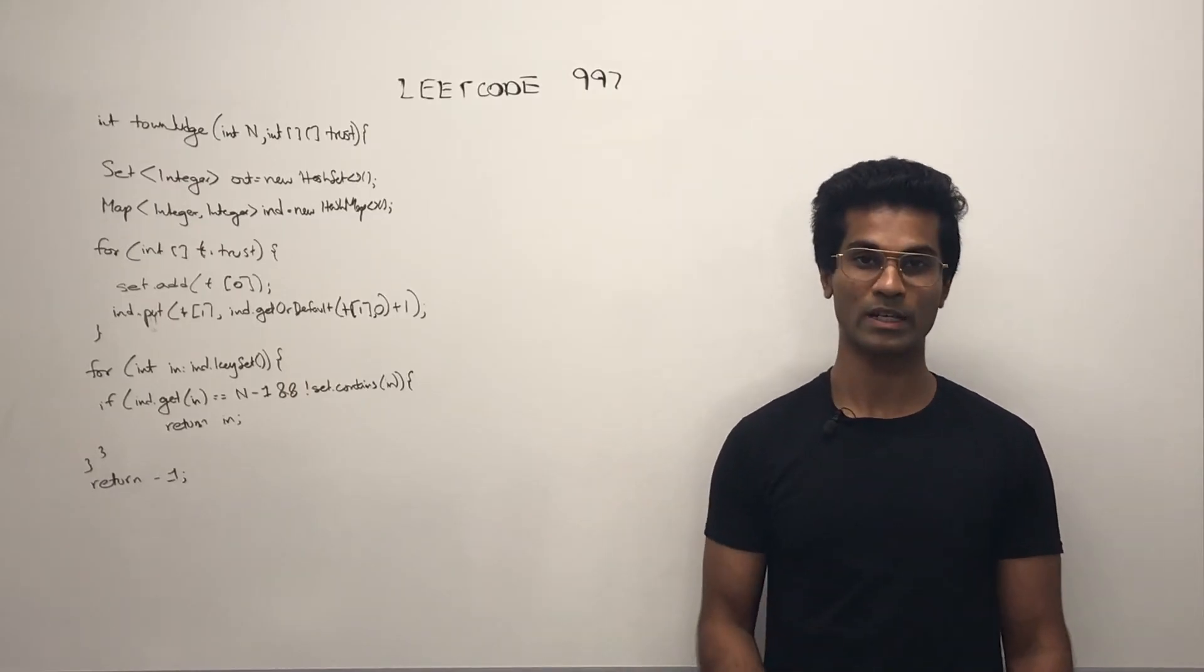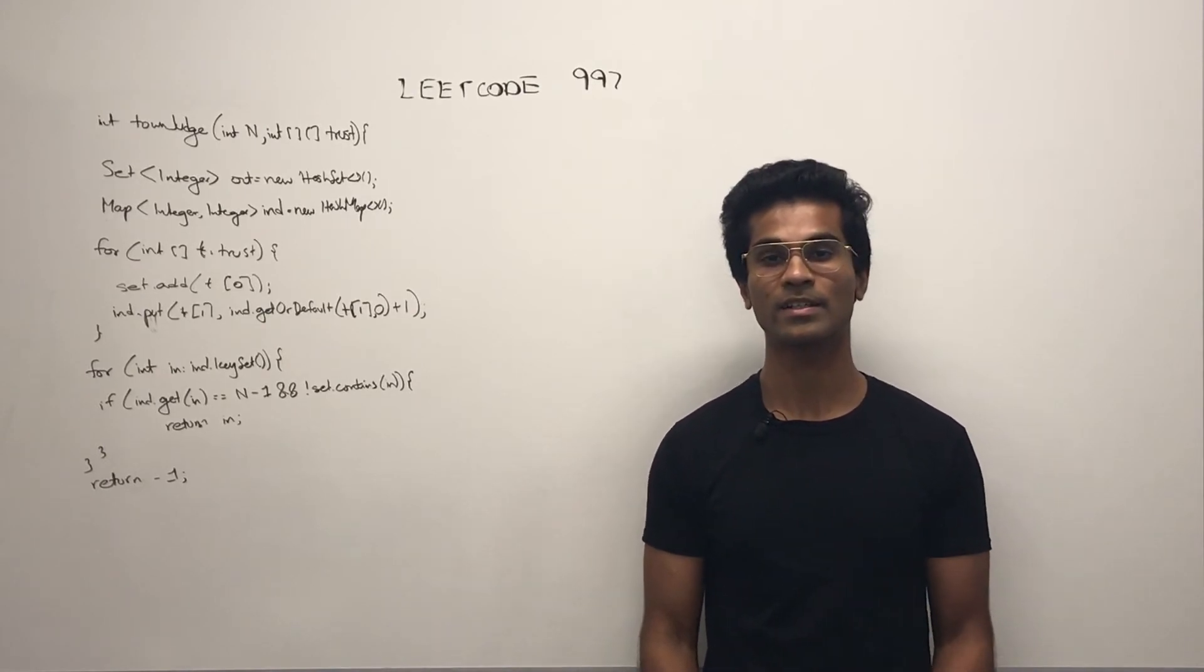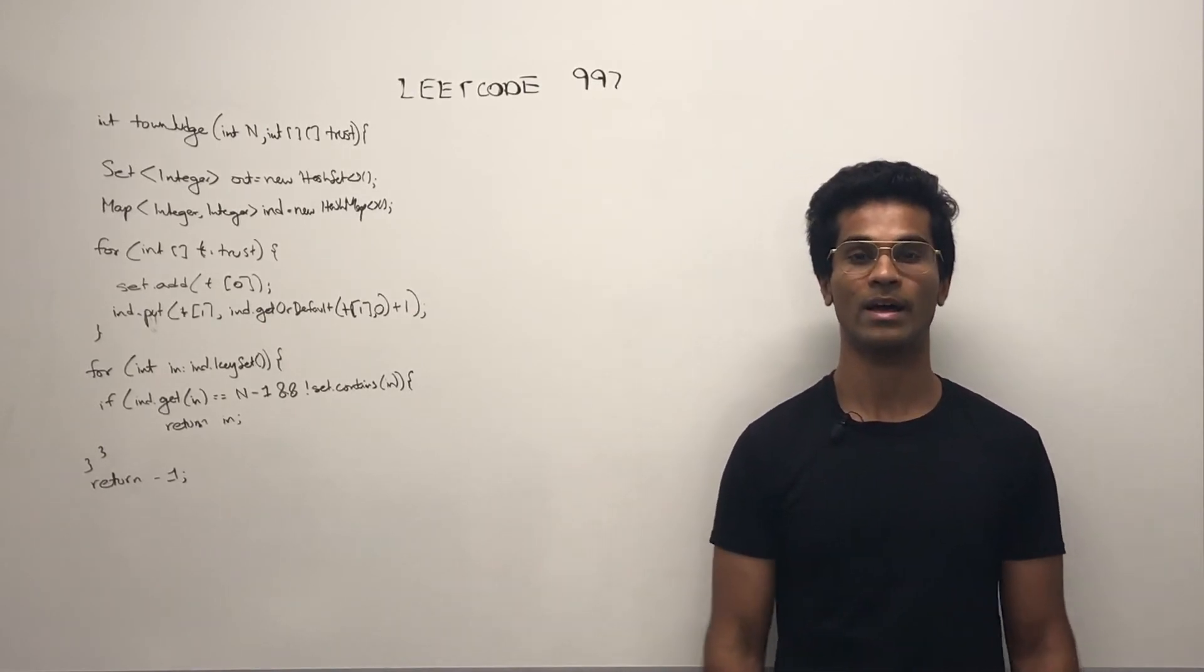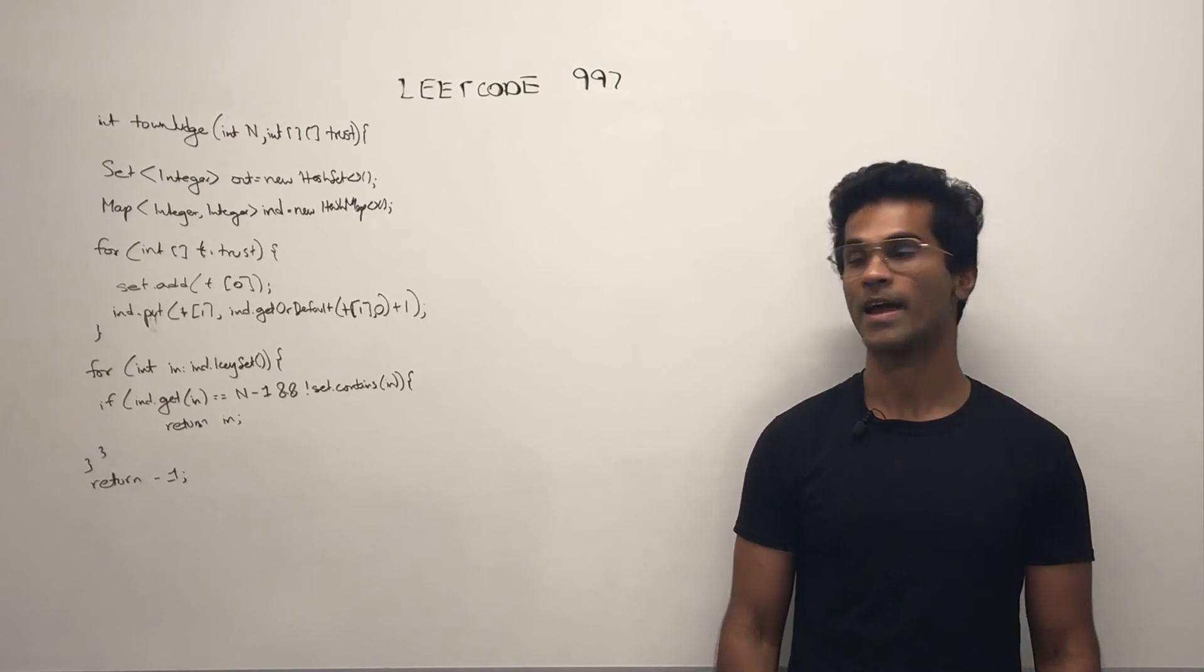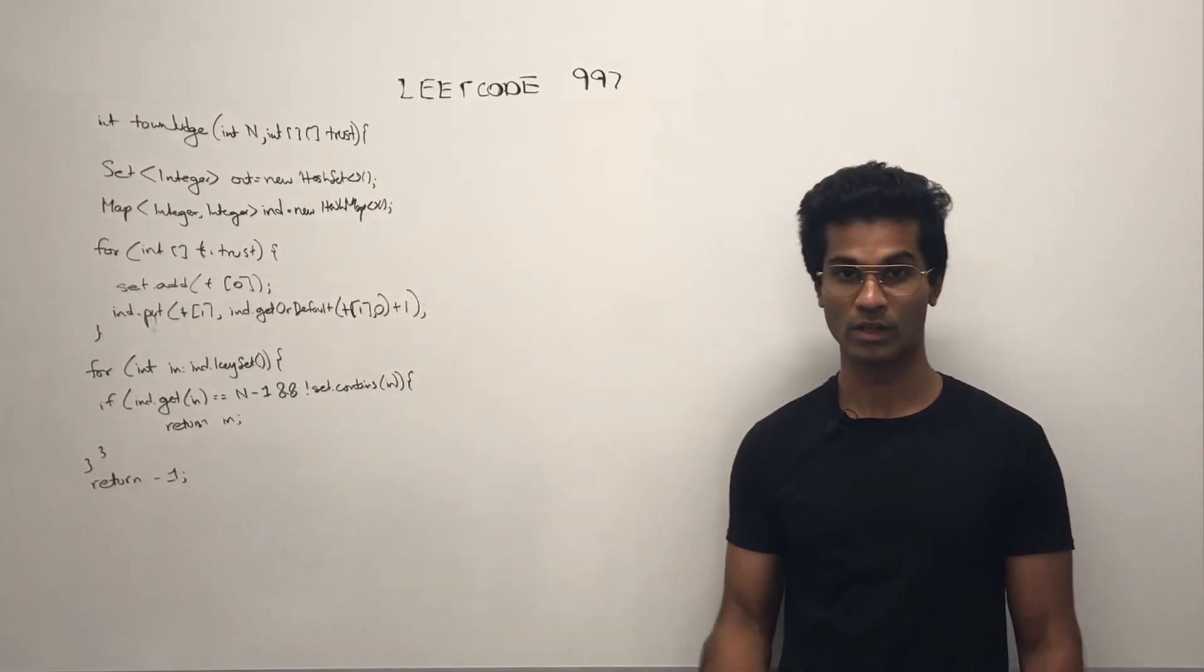Before we begin processing, we're going to initialize our two data structures: a set to keep track of all the nodes that are outgoing, and a map to keep track of the in degrees for the nodes.